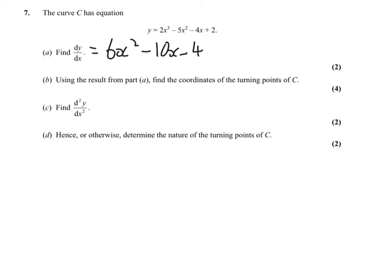Using the result from part A, find the coordinates of the turning points. Make dy/dx equal to 0 and solve it — factorise it. Then find d²y/dx², the second derivative, which is 12x minus 10.